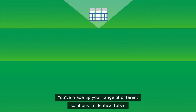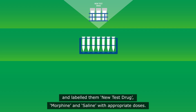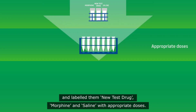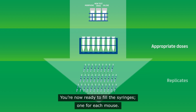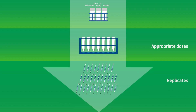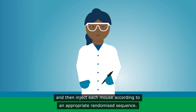You've made up your range of different solutions in identical tubes and labelled them: new test drug, morphine, and saline with appropriate doses. You're now ready to fill the syringes, one for each mouse. You could label the syringes so that you know which solution is in each syringe, and then inject each mouse according to an appropriate, randomised sequence.